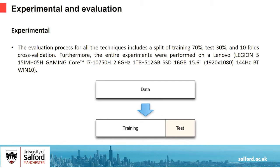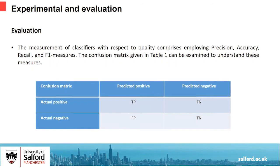The evaluation process for all the techniques includes a split of training 70%, test 30%, and 10-fold cross-validation. Furthermore, the entire experiments were performed on a local machine. The loading of the entire dataset into a Jupyter notebook in the Anaconda environment is the initial step. The URL features are then classified using each of the 8 techniques. Subsequently, the 8 methods having the highest accuracy were chosen and were assessed for their performance on the phishing datasets.